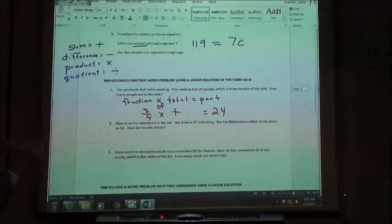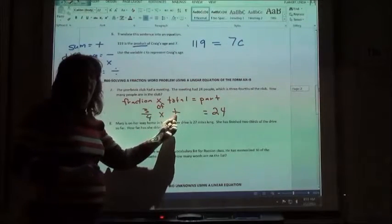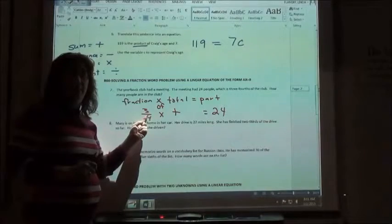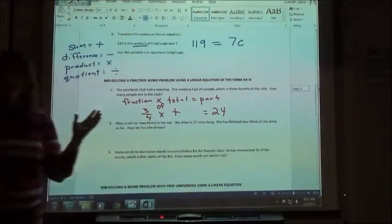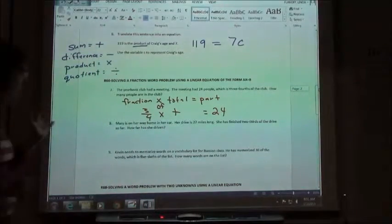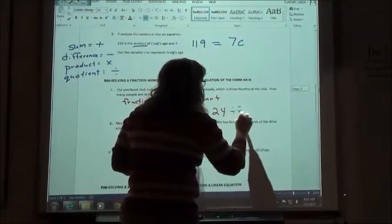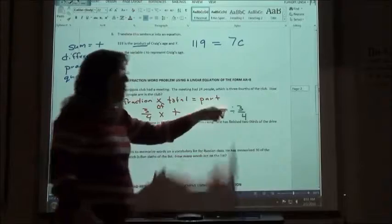Now we know here that if I want to get this by itself, I need to get rid of the three-fourths and move it to the other side by doing the opposite. The opposite of multiplying is? Dividing. And if I divide by three-fourths, what do I have to do?